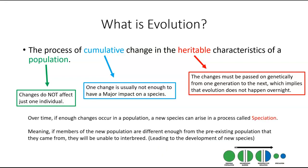Over time, if there is enough change that occurs in a population, a new species can arise in a process called speciation. Speciation is, by definition, the origin or the creation of a species, often from another species. We know that organisms can't spontaneously appear on the planet, so new species can't just spontaneously appear either. These new species arise from the evolution of previous species — they are developed over time through the accumulation of really small genetic changes in a particular species as their environment changes.